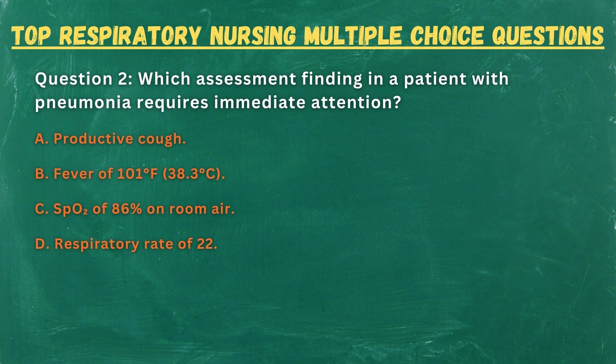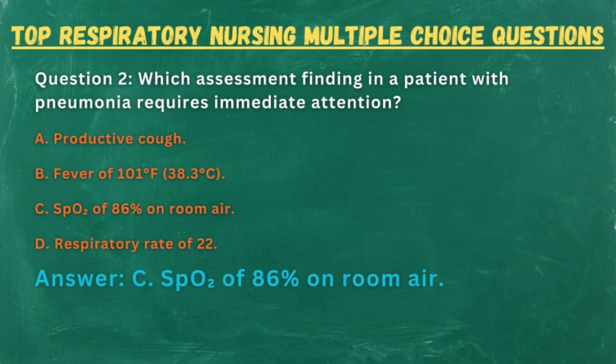Question 2. Which assessment finding in a patient with pneumonia requires immediate attention? A. Productive cough. B. Fever of 101°F (38.3°C). C. SpO2 of 86% on room air. D. Respiratory rate of 22. Answer: C. SpO2 of 86% on room air.